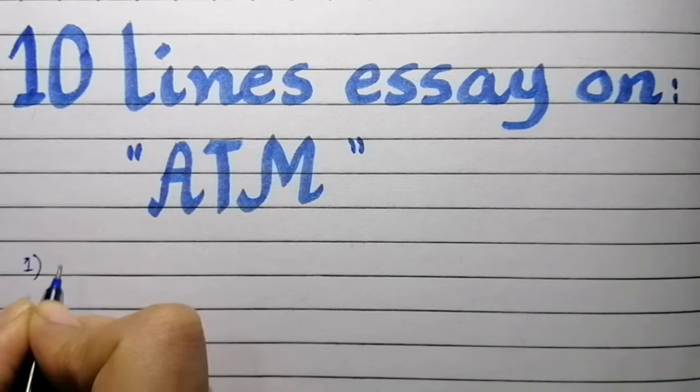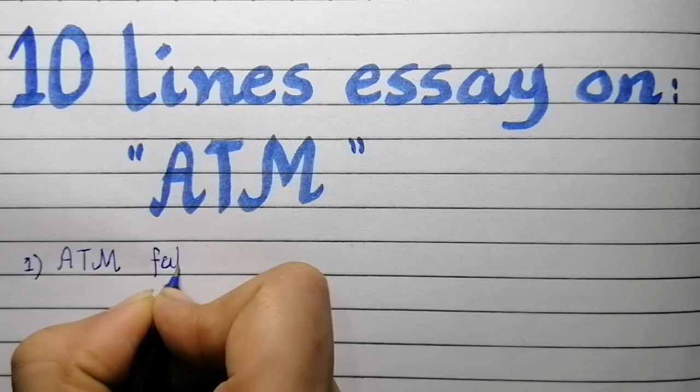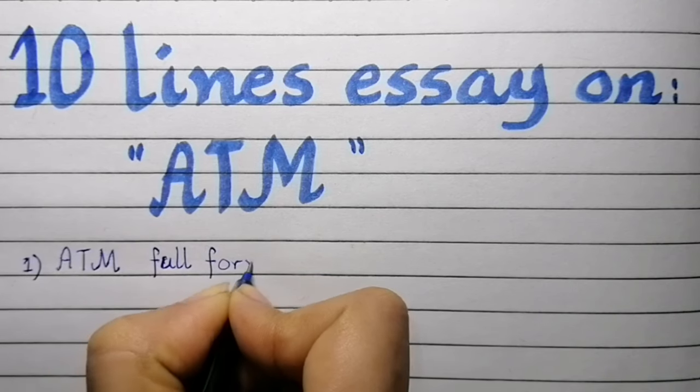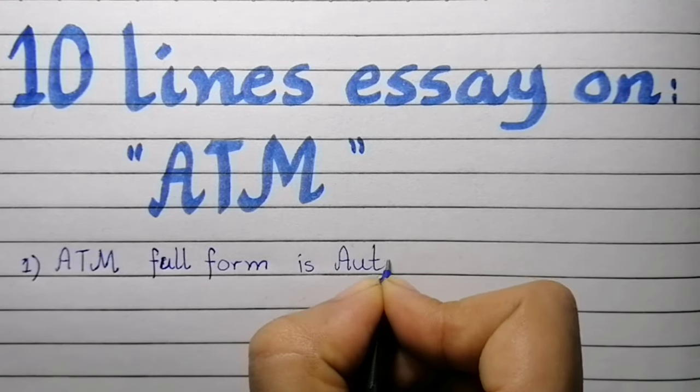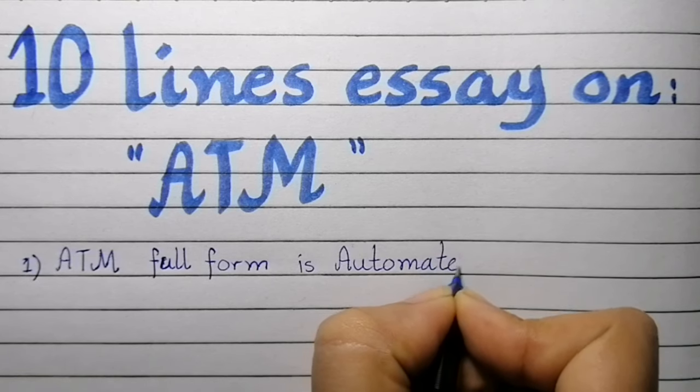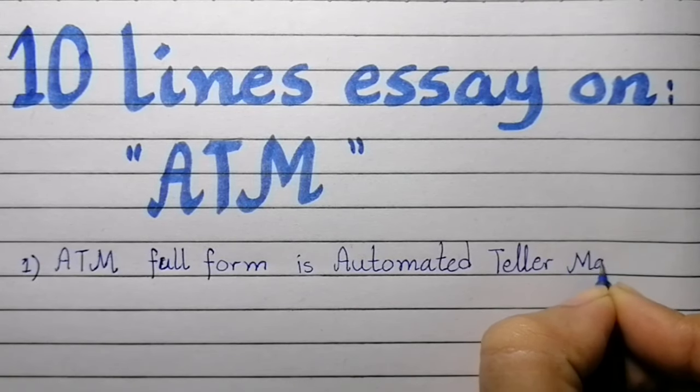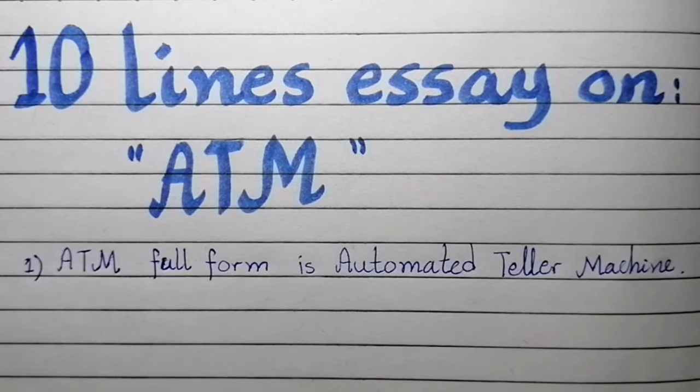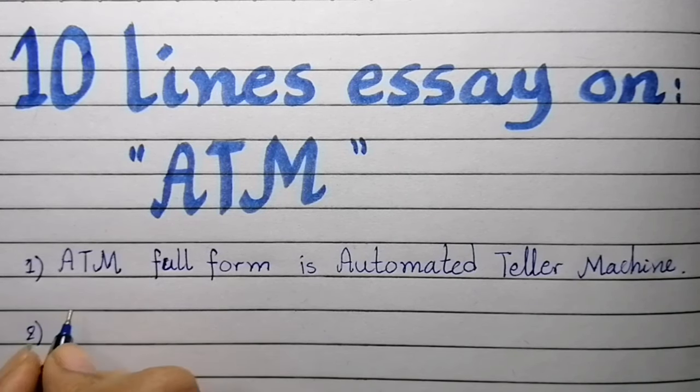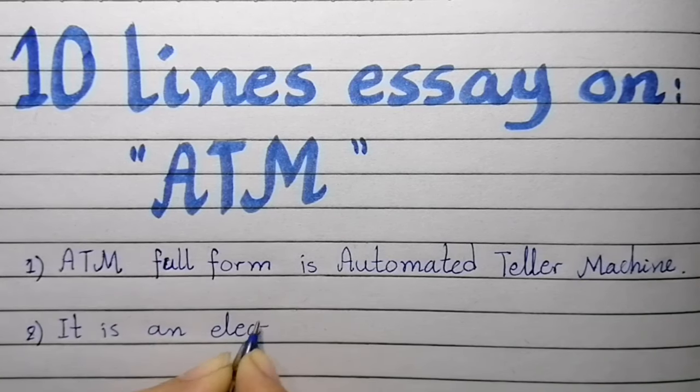Point number one is ATM full form. ATM full form is Automated Teller Machine. ATM full form is Automated Teller Machine. Point number two, it is an electronic device. It is an electronic device.